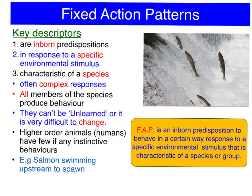A fixed action pattern is an inborn predisposition to behave in a certain way in response to a specific environmental stimulus or situation that is characteristic of a particular species or group. Key points are that all members of the species will produce the behaviour first time of asking. Generally this behaviour will not be forgotten, i.e. unlearned. And as we move up the food chain, higher-order animals such as humans have few, if any, FAPs. Our behaviour is not instinctive — we have free will. Examples of FAPs include salmon swimming upstream to spawn and spiders spinning webs to catch their prey.